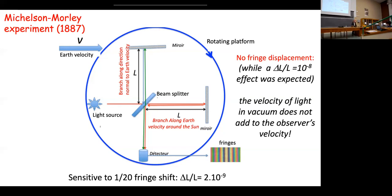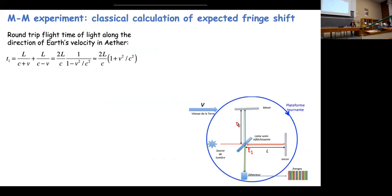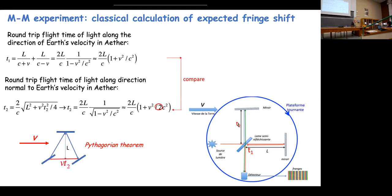The experiment was sensitive to a displacement of about 1/20th of a fringe; the expected effect was about five to ten times bigger. Yet Michelson never saw any displacement of the fringes. The question was: what was wrong? The expected effect can be calculated — the time for light to go back and forth along the first arm is 2L/c times (1 + v²/c²), where c is the speed of light and v is the Earth's velocity.